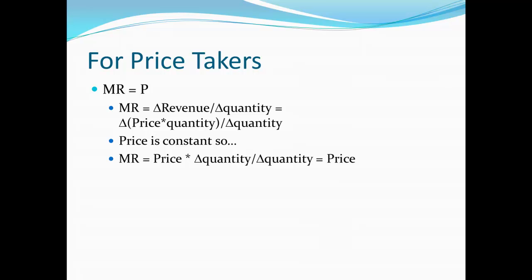We notice that marginal revenue is always $5, and the price is always $5. There's a reason for that: marginal revenue is the change in revenue divided by the change in quantity. But for a price taker, the price is constant, so any change in revenue is driven entirely by the change in quantity. The change in quantity can divide out, and so marginal revenue and price are the same thing.